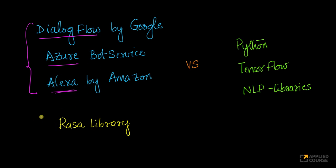Similarly, we also discussed how to actually build a chatbot by writing your own code using a very popular library for chatbot construction called Rasa. So these are two approaches that we have already discussed — one where you don't have to write much code, and one where you have to write the code but most of the functionality is readily available for you.